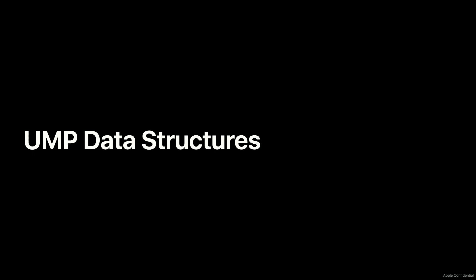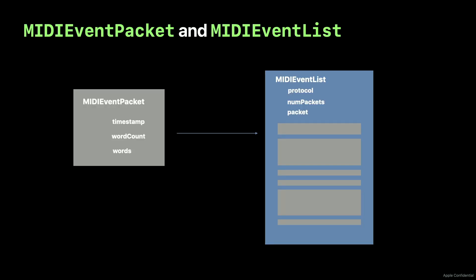Let's get started with the UMP data structures. Event packets and event lists are used throughout all of Apple's MIDI 2.0 Universal MIDI Packet APIs. An event packet is a UMP stream of simultaneous events of total length words. Though the structure is declared to be a specific length, event packets are variable length and the number of 32-bit words, the size, is in the words field. These variable length packets can then be added to variable length event lists.